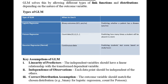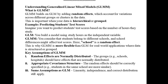The key assumptions of GLM are: first, linearity of predictors — the independent variable should have a linear relationship with the transformed dependent variable; second, independence of observations — each data point should be independent of the others; and third, correct distribution — the outcome variable should match the chosen distribution, for example binary for logistic regression and count for Poisson.